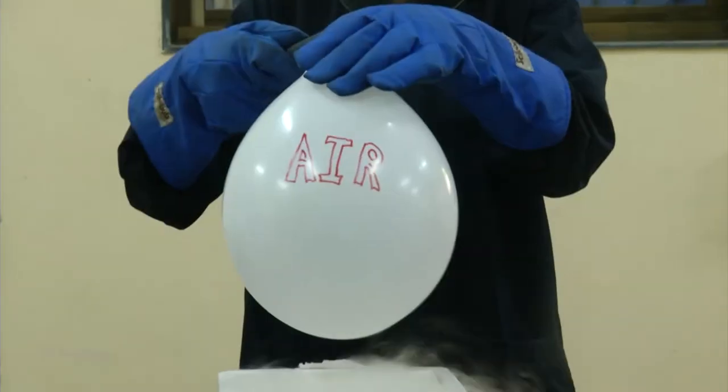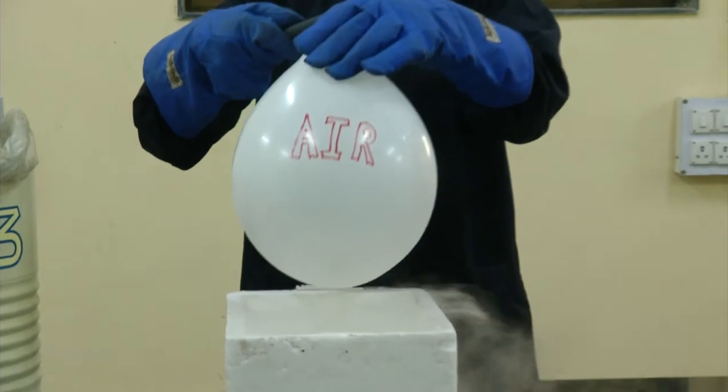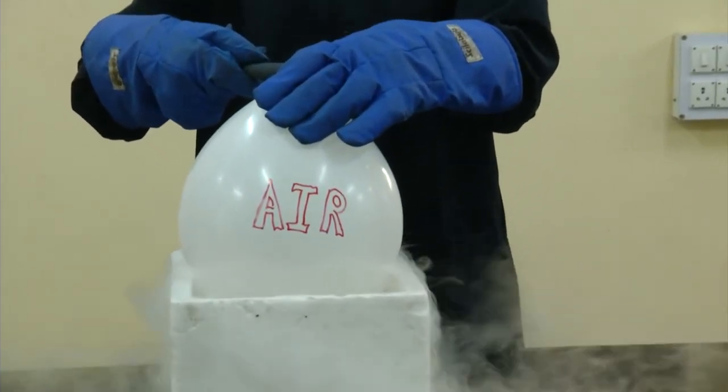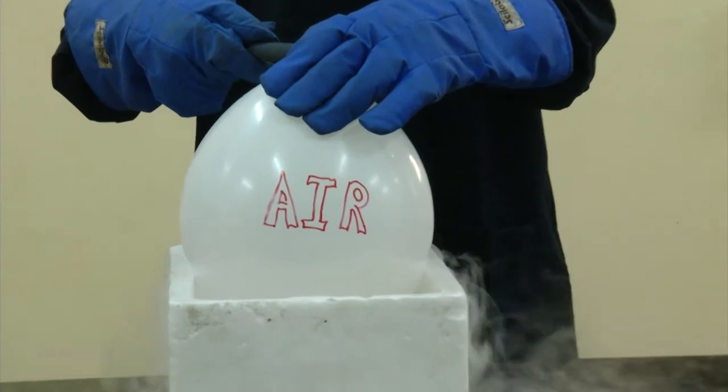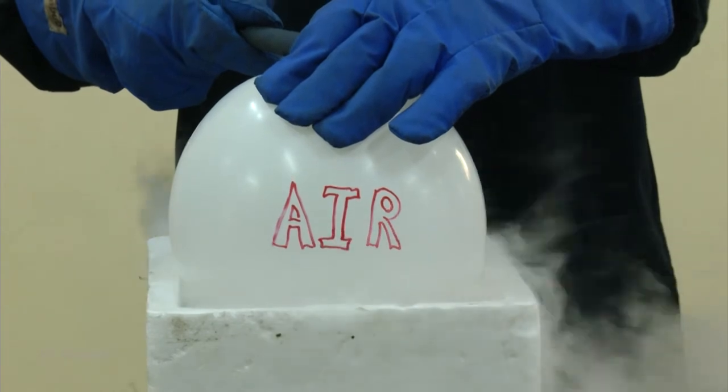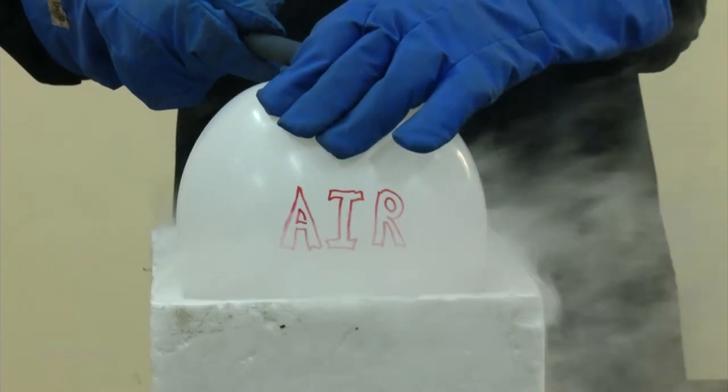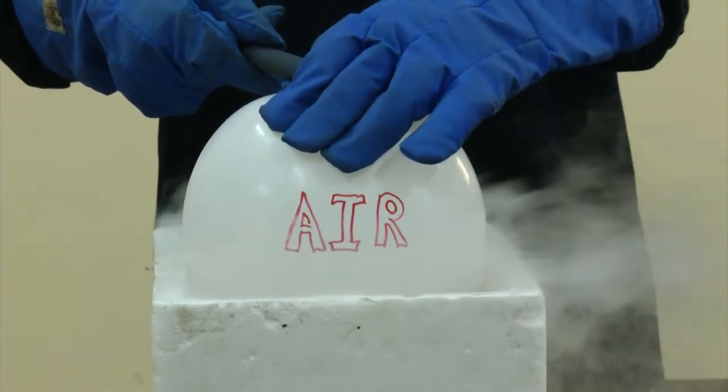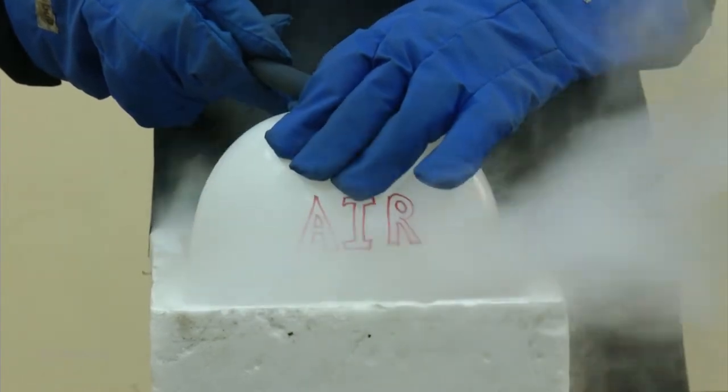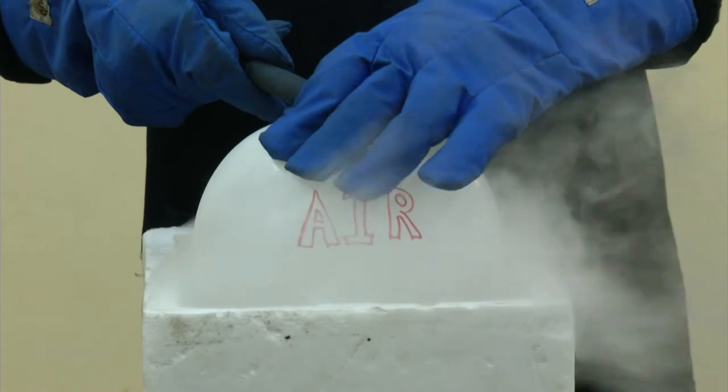Now I am taking air instead of CO2. I will take air in the balloon and this balloon will again be subjected to 77 Kelvin or minus 196 degrees centigrade. Air has a boiling point of 78 Kelvin and you can see that this gaseous form air will get liquefied when it is put in liquid nitrogen.